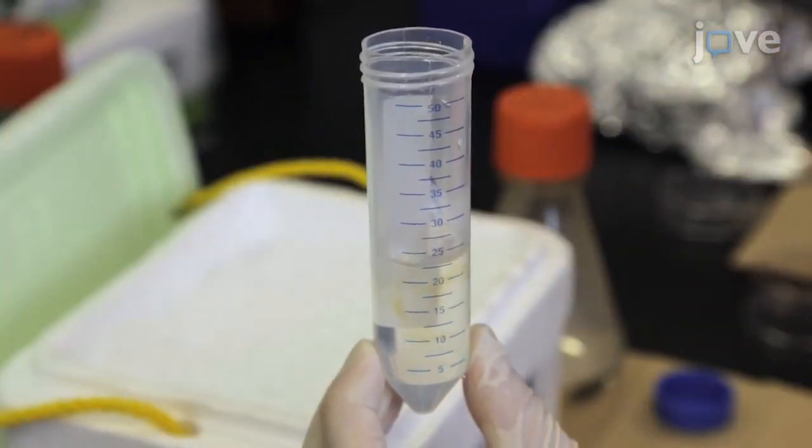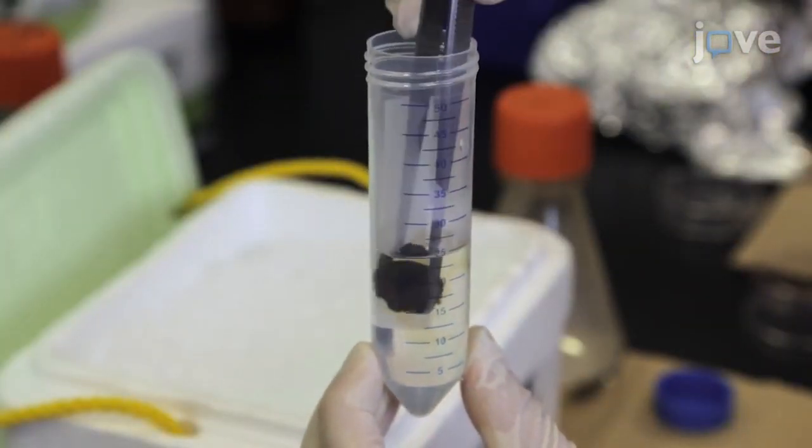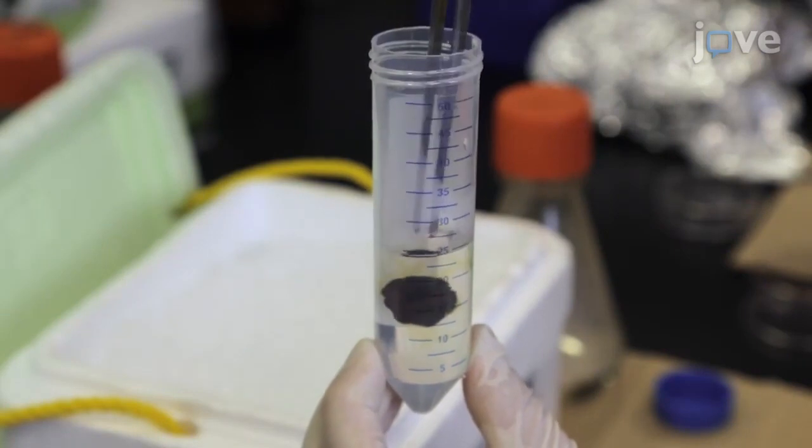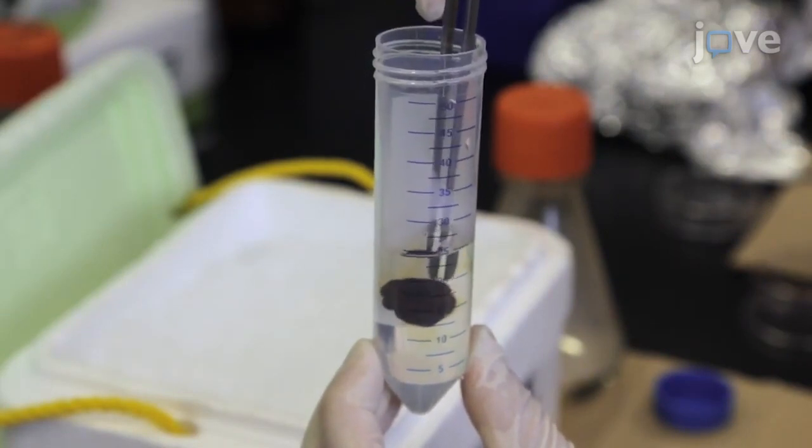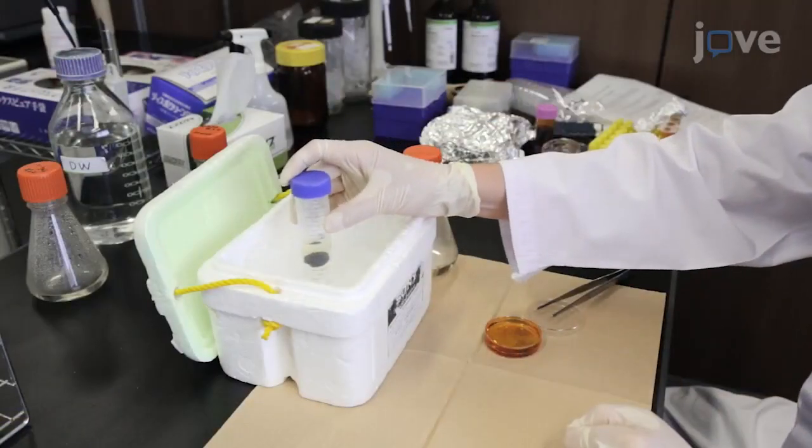Use forceps to place the specimen within the agarose. Adjust the position of the specimen so that its body axis is vertical. Harden the agarose on ice.